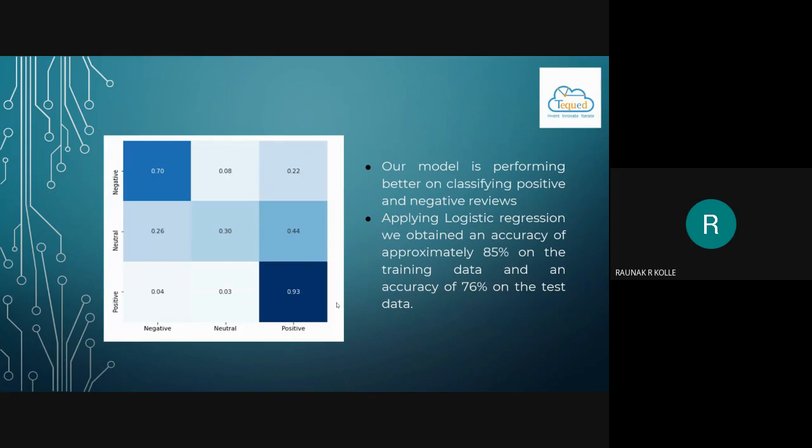Finally, we have a confusion matrix here where we have 0.7 as the negative score, 0.4 as the neutral score and 0.93 as the positive score. Our model is performing better on classifying positive and negative reviews.